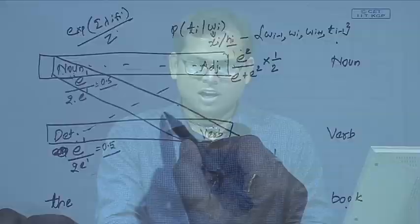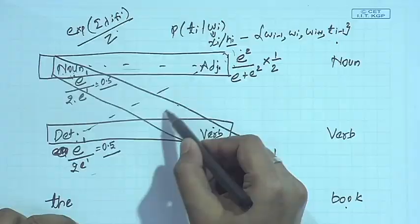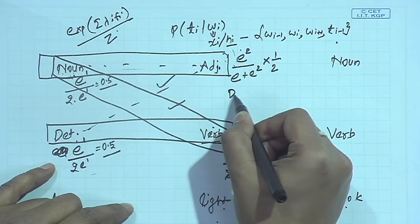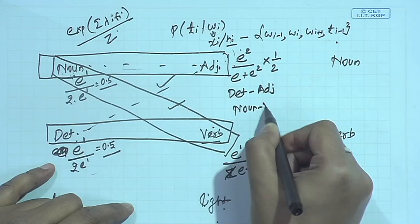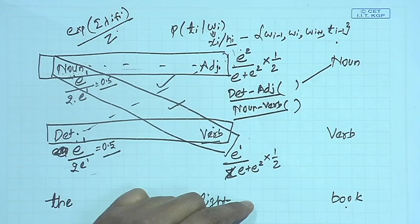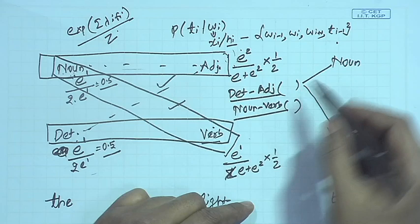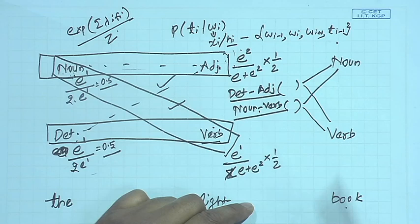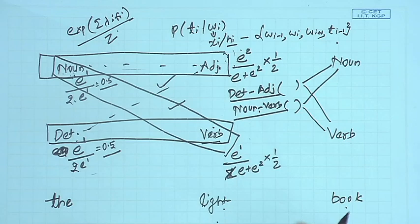Suppose the top two are noun→verb and determiner→adjective. In the next step we consider only those two and extend them to the third word: determiner→adjective→noun, determiner→adjective→verb, noun→verb→noun, and noun→verb→verb. We compute and normalize probabilities accordingly, multiply, get four sequences, and take the one with the highest probability as the final tag sequence. I encourage you to solve this fully on your own using the MEMM model.